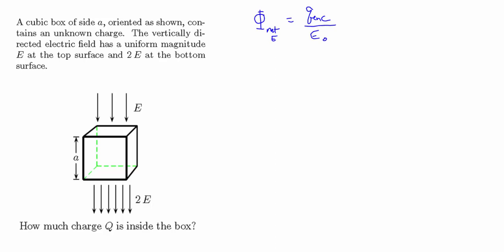The first problem has an electric field pointing downward with strength E at the top surface of this cube and a strength of 2E at the bottom surface. It's a cubic box of sides A. There's no flux through the front, back, left, or right sides, since the electric field is straight down and no electric field is passing through those four sides. There's only flux through the top and the bottom.